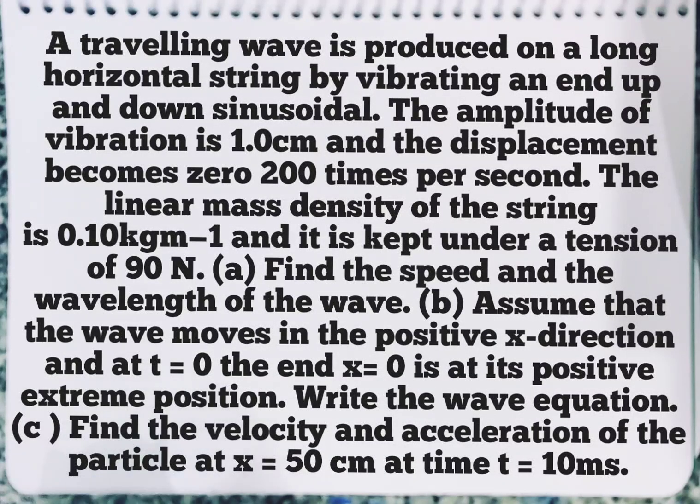A traveling wave is produced on a long horizontal string by vibrating an end up and down sinusoidally. The amplitude of vibration is 1 cm and the displacement becomes zero 200 times per second.